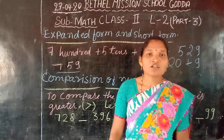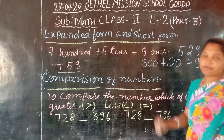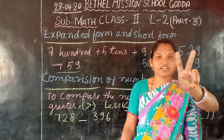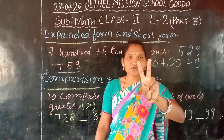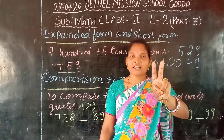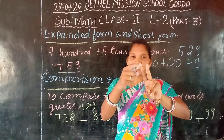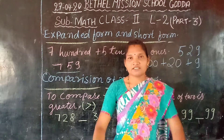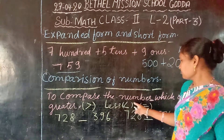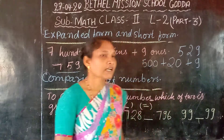The next topic is comparison of numbers. Comparison of numbers means — now I have these two fingers. Did you see? Are these two fingers equal? No. So we compare. The pointed finger is smaller than the middle finger. This is how we compare which of two numbers is greater.